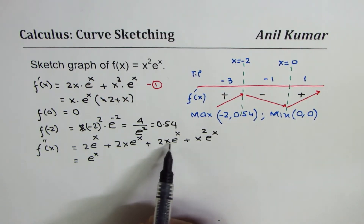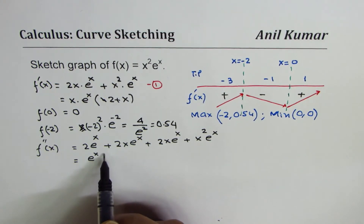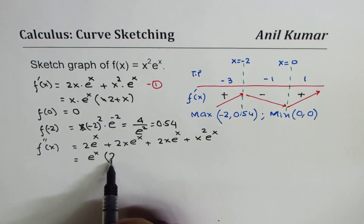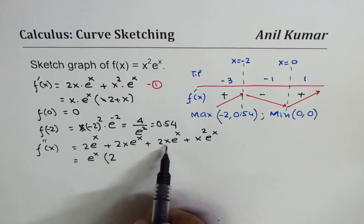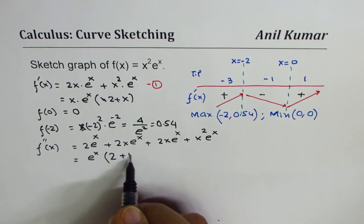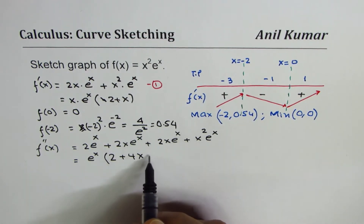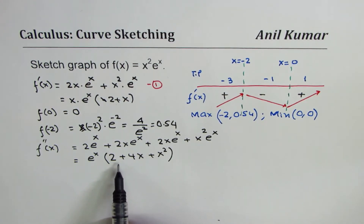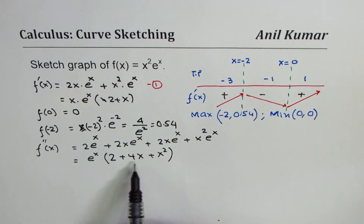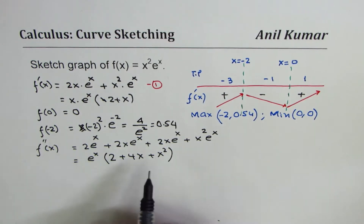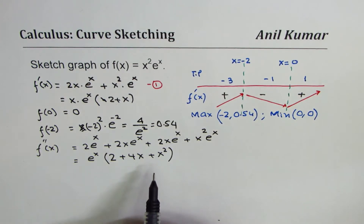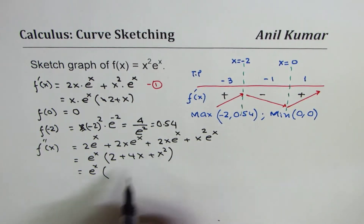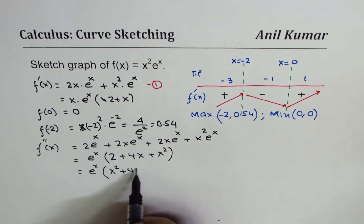We can factor out eˣ. The two 2x · eˣ terms combine to give 4x, so the second derivative is eˣ · (x² + 4x + 2). That becomes a quadratic expression. We can find its roots using the quadratic formula.